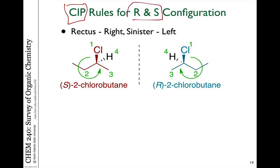We call this the R and S configuration, because R is the Latin for rectus, or right, and S is the Latin for sinister, or left. If we take this molecule 2-chlorobutane, this has one stereogenic carbon, indicated at the carbon where the chlorine is attached.